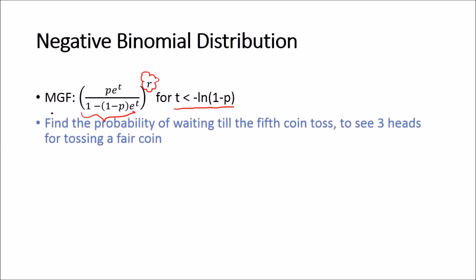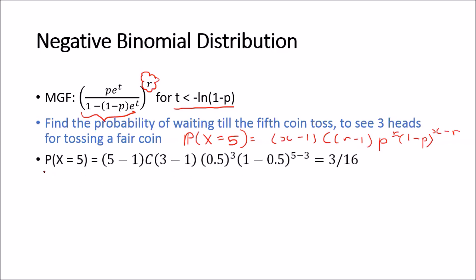As a last example: find the probability of waiting until the fifth coin toss to see three heads when tossing a fair coin. That is P(X=5), which equals (X−1 choose R−1) times P^R times (1−P)^(X−R). Substituting X=5, R=3, and P=0.5, we find the answer to be 3/16.